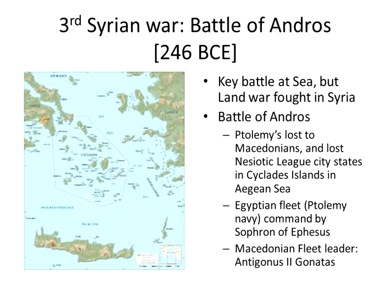In the third Syrian War, the battle of Andros was the key battle, fought at sea, while the land war was fought in Syria. At the battle of Andros, Ptolemy loses to the Macedonians and loses the Cycladic islands in the Aegean Sea — losing part of the Greek sphere. The Egyptian fleet was commanded by Sophron of Ephesus and the Macedonian fleet winner was Antigonus.